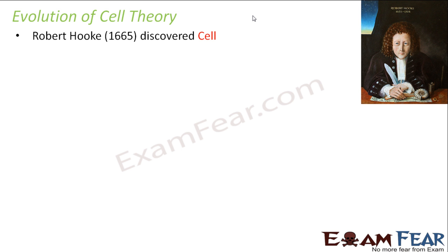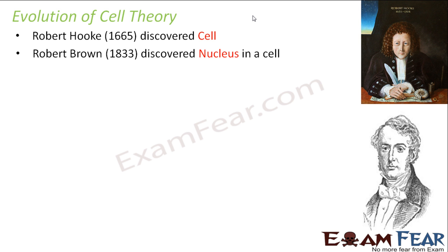In 1665, Robert Hooke discovered the cell. Then around 1833, another scientist named Robert Brown discovered the nucleus inside a cell. Notice the time gap — 1665 and then 1833 — a very long gap. That means nothing got discovered very quickly. Robert Hooke told us cells are there, but the detailed knowledge of cells came after a very long time. Scientists took quite a long time to understand the structure, composition, and different parts of the cell.